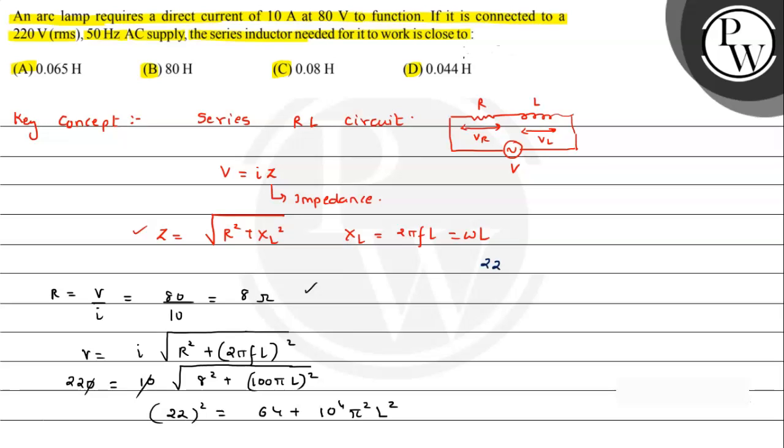Or we will take the same value, that is 22 squared. So it comes out to be 484 minus 64, which becomes 420, equals 10⁴ times 9.86 times L². So this value comes out to be 42.59—we have divided 420 by 9.86 and into 10⁻⁴—and that equals L².